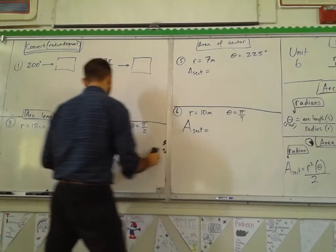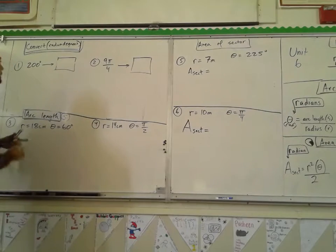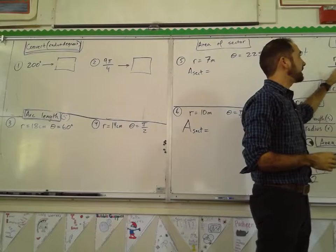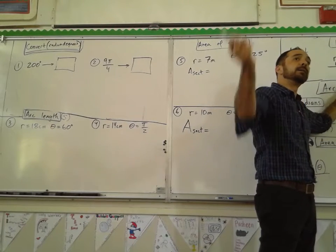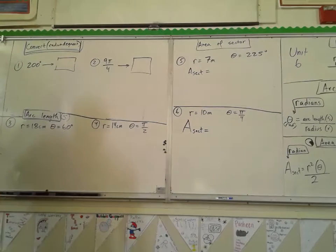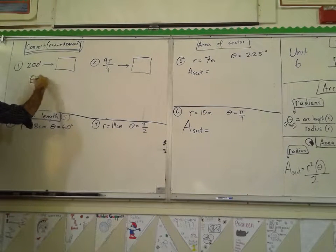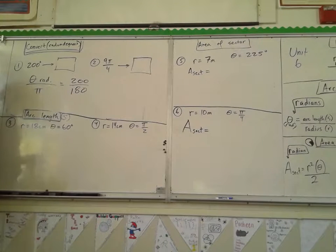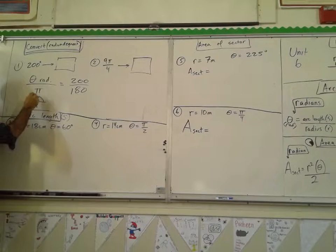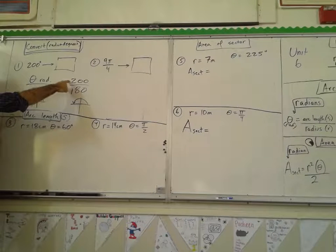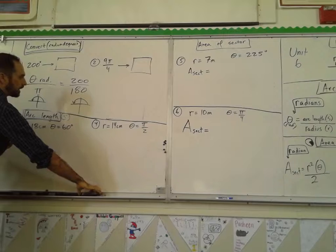For converting degrees to radians, use the proportion: radian measure over π equals degree measure over 180. This works because π radians is a semicircle — halfway around — and 180 degrees is also a semicircle. So we relate the proportion: theta in radians over π equals the degree measure over 180.